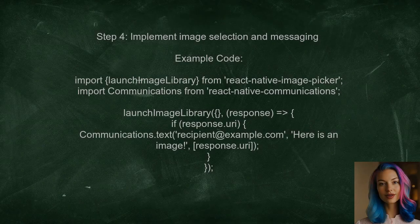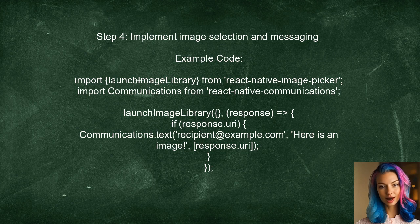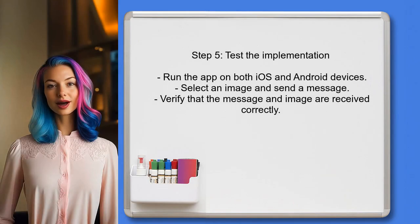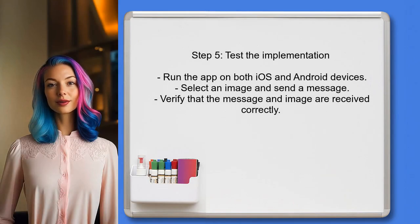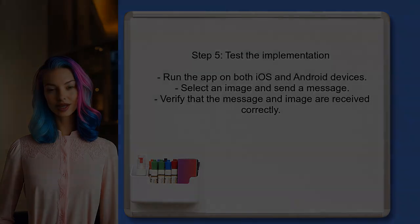Now the user can implement the functionality to select an image and send a message. They should use the Image Picker to select an image and then use the React Native Communications Library to send the message. Finally, the user should test the implementation on both iOS and Android devices to ensure that the messages with image attachments are sent successfully.